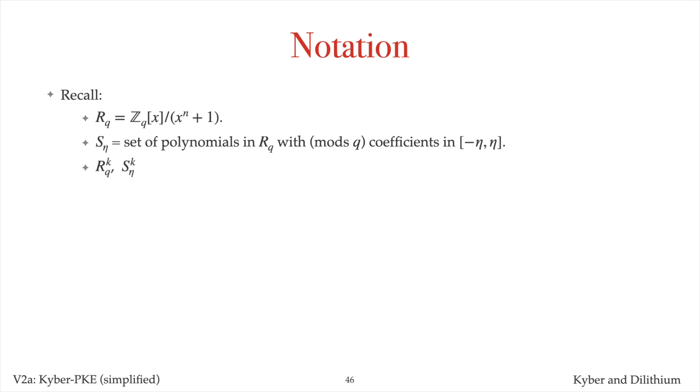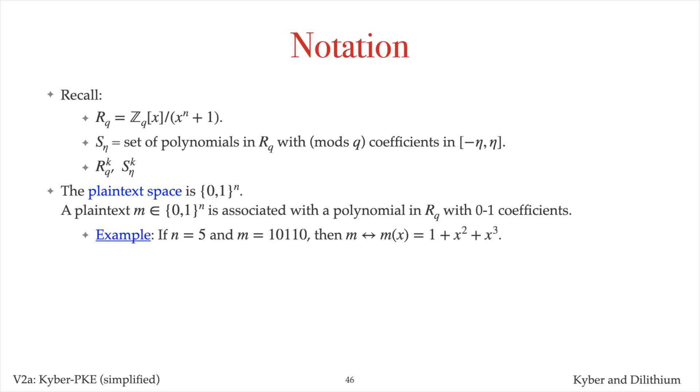RQ^K is a set of length K column vectors whose components are small polynomials in S_eta. In the Kyber public encryption scheme, the plaintext space is a set of all binary strings of length n. Such a plaintext M is associated in the natural way with the polynomial in RQ with 0, 1 coefficients. For example, if n equals 5, then the plaintext 10110 is associated with the polynomial 1 plus x squared plus x cubed.